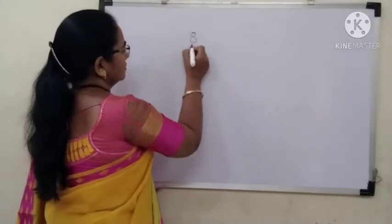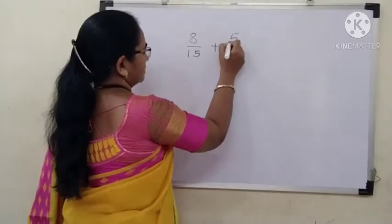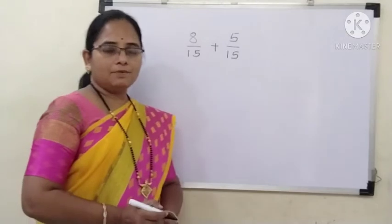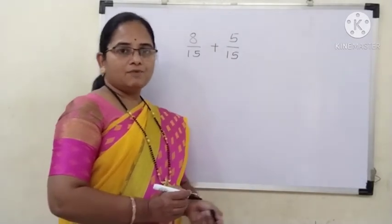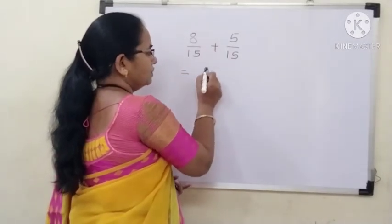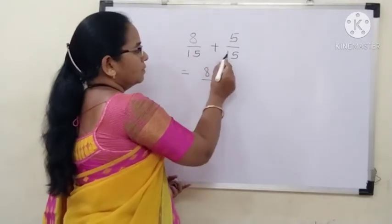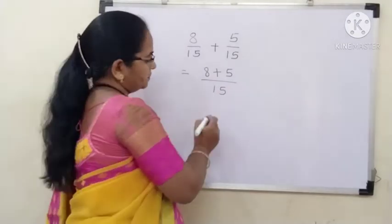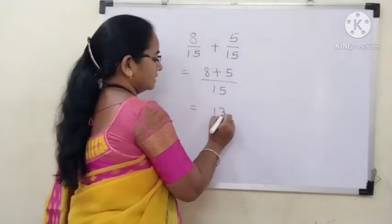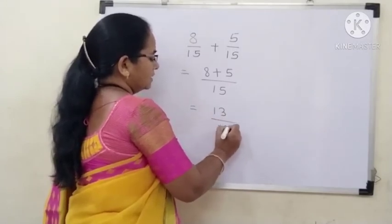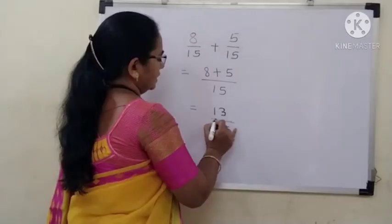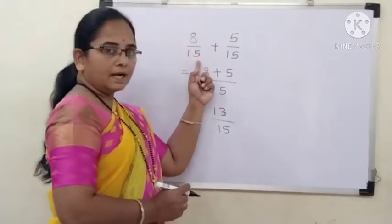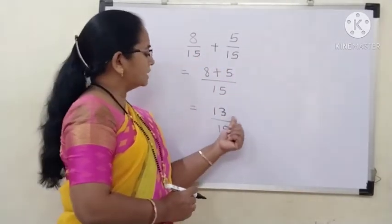I will take the first example of addition of fractional numbers. Here I am having 2 fractional numbers: 8 by 15 and 5 by 15. I have to add these 2 fractional numbers. The first step will be to write the value of the numerator and add these 2 numbers — 8 plus 5. Put the value of the denominator as it is. 8 plus 5 is 13. So when we add 8 by 15 and 5 by 15, we get the answer 13 by 15.